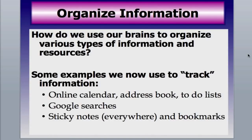We're going to look at the RDF structure, but first I want to talk about how our brains organize various types of information and resources. Think about how we track information now: we have online calendars, desktop calendars, address books, to-do lists, all the stuff on blogs and web pages, Google searches. Everybody uses sticky notes and puts them everywhere. Even something as simple as a bookmark allows us to track information and get to it quickly.